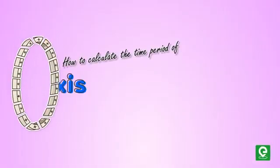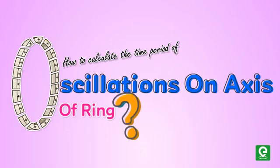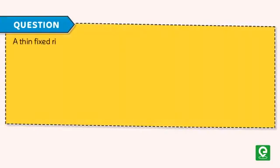How to calculate the time period of oscillations on the axis of a ring. Question: A thin fixed ring of radius 1 meter has a positive charge 1 × 10⁻⁵ coulomb